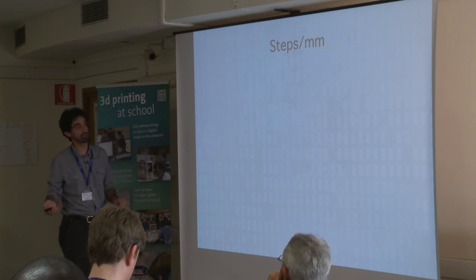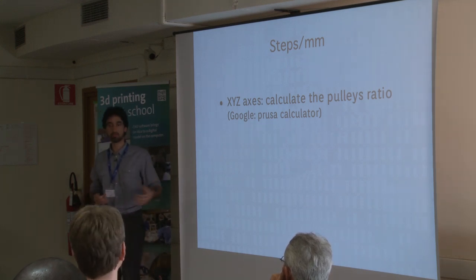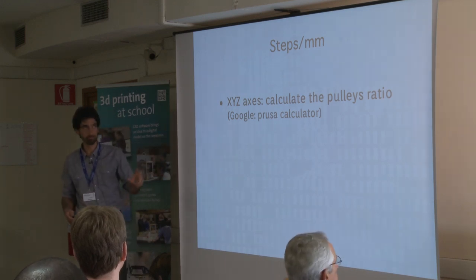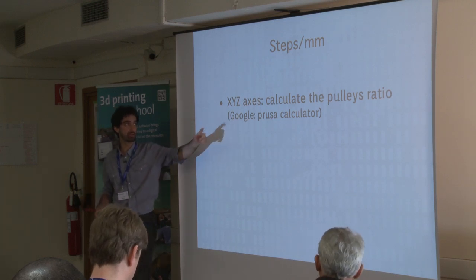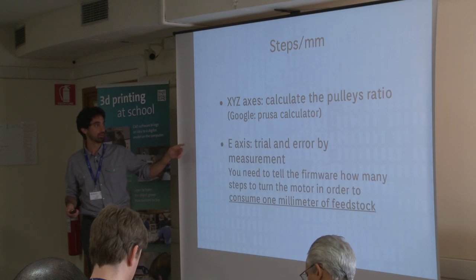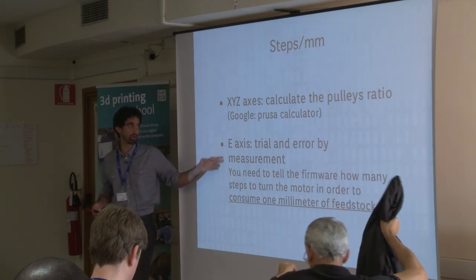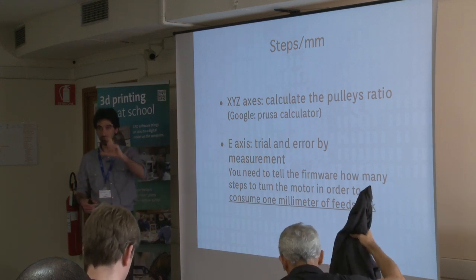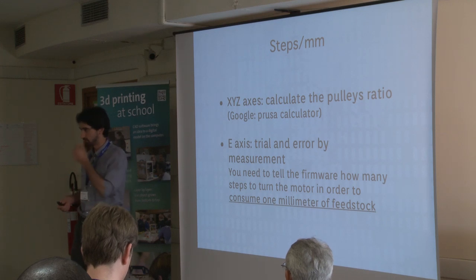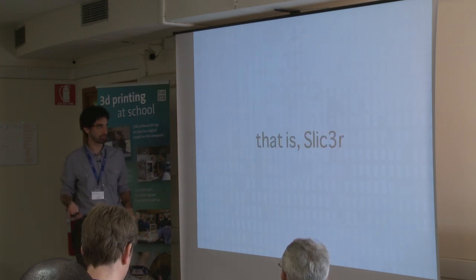The most important calibration is converting motor steps to millimeters of linear movement. These are stepper motors that turn in steps. For the axes, you calculate the ratio using the known dimensions of your mechanical components - it's basic math. For the fourth axis - the extrusion motor - there is a common trial-and-error procedure: mark some distance on your feedstock filament, tell the printer to extrude some length, see what it actually extruded, and do the math to fix the conversion factor.